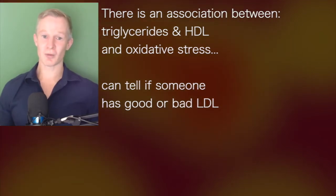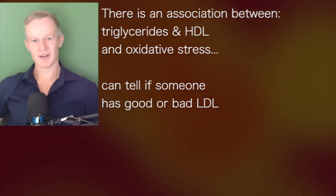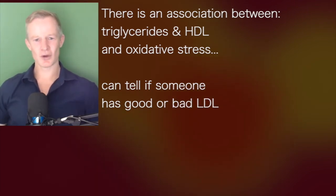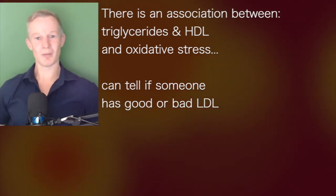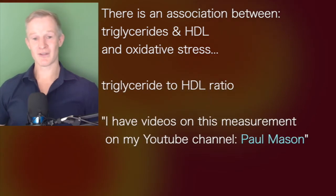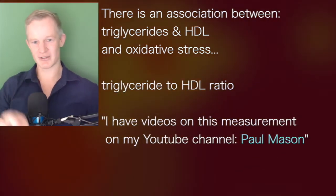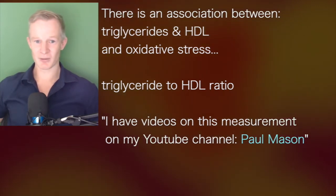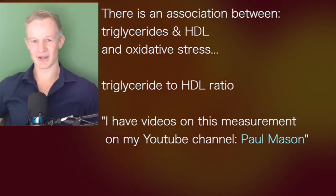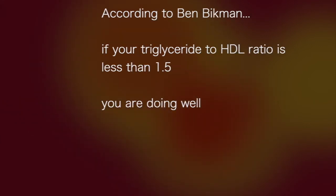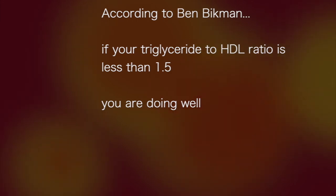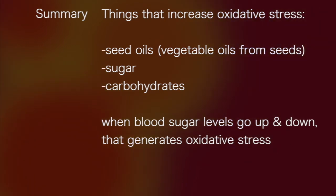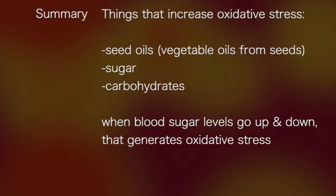Looking at triglyceride and HDL, we know there's an association with oxidative stress and we've got very reliable associational data. It's not as good as directly measuring it, but we can infer with a high degree of reliability whether somebody has good or bad LDL simply by looking at the triglyceride to HDL ratio — we divide triglycerides by HDL. According to Ben Bikman, if your triglyceride to HDL ratio is less than 1.5, you are doing well.